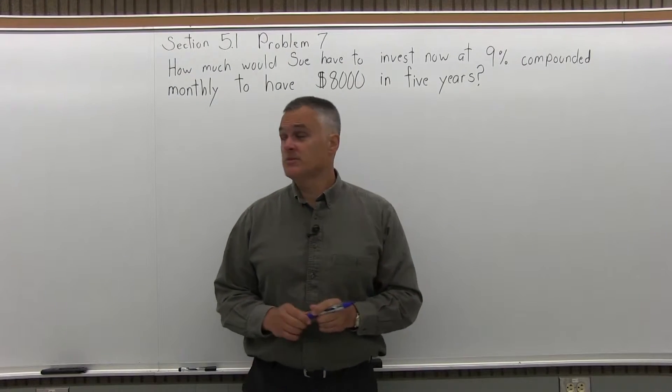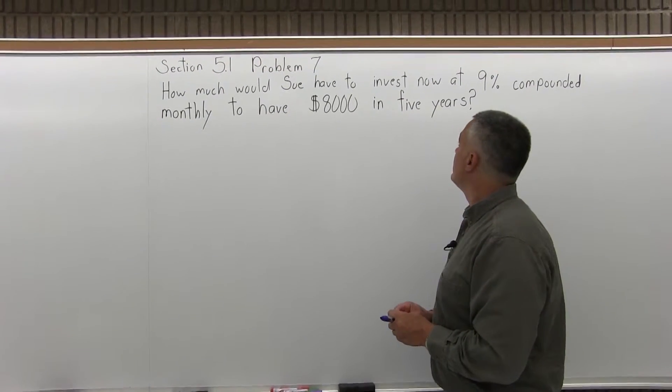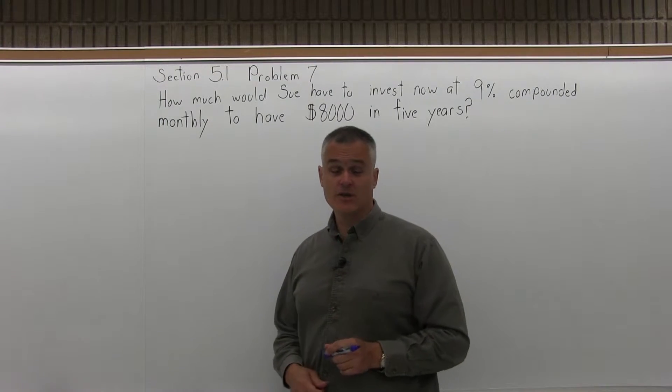This is Section 5.1, Problem 7, and it asks: how much would Sue have to invest now at 9% compounded monthly to have $8,000 in five years?